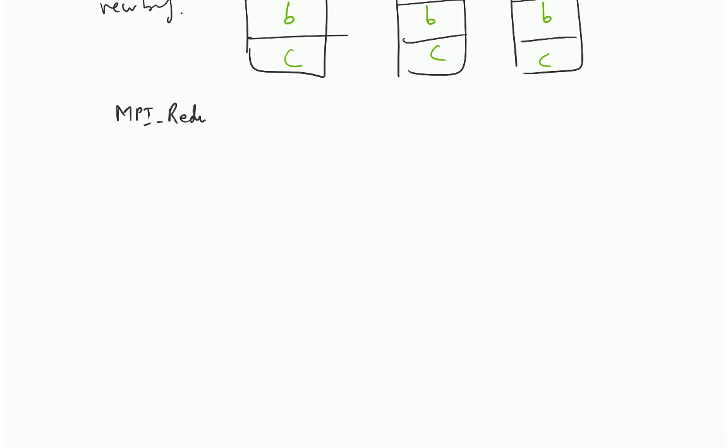This is an important call MPI reduce. Well, MPI reduce and MPI all reduce are quite important. The parameters are send buffer, receive buffer, count, data type, operation to be performed, root, and communicator.